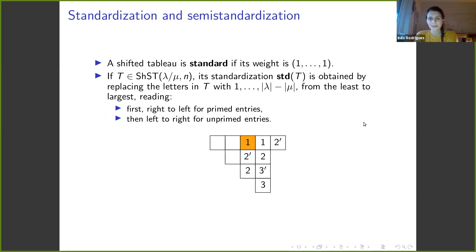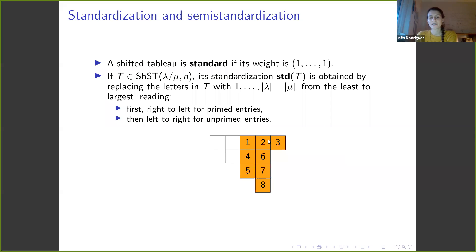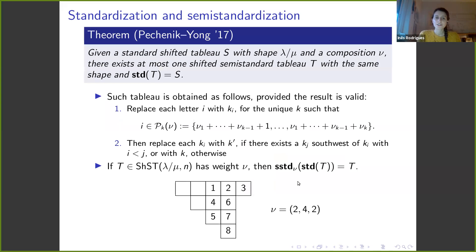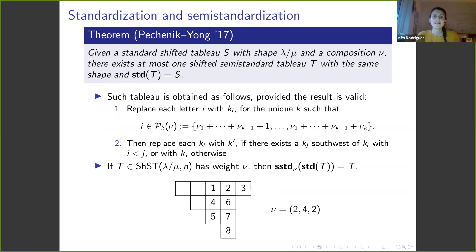For example, first we process the ones: 1, 2. For the twos, first we do the two-primes right to left, giving 3 then 4, then the unprimed twos left to right giving 5 and 6, then threes 7 and 8. This gives a standard tableau. This process can be reverted: by a result of Pechnik and Young, given a standard shifted tableau and a composition, there is at most one shifted semi-standard tableau with that shape whose standardization is the given standard tableau.